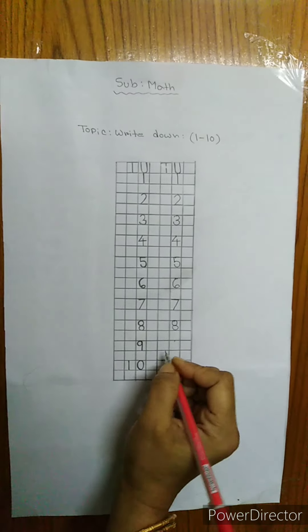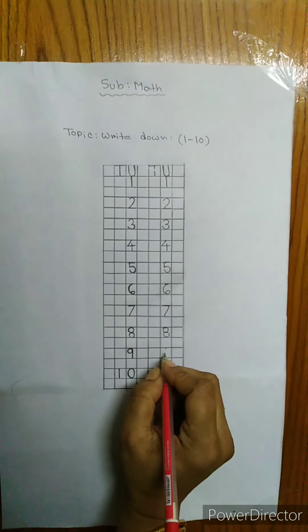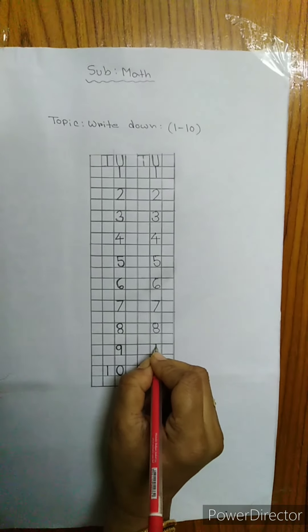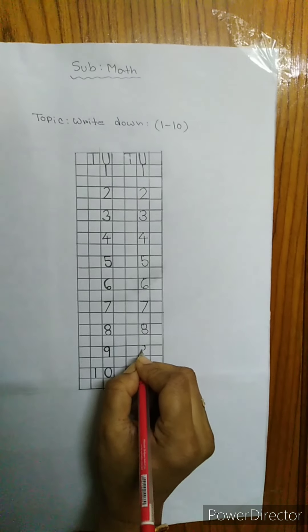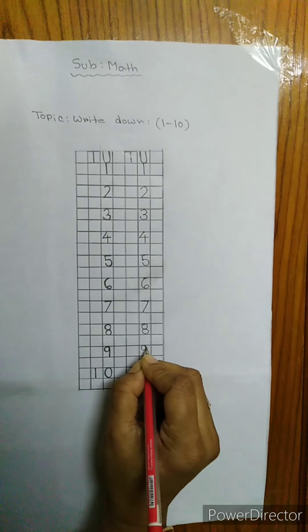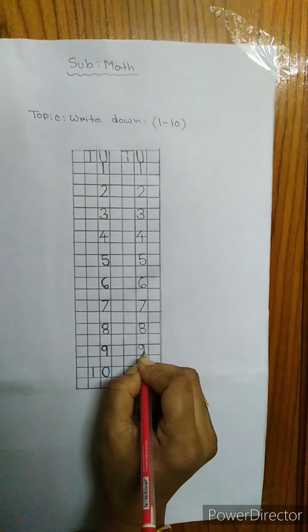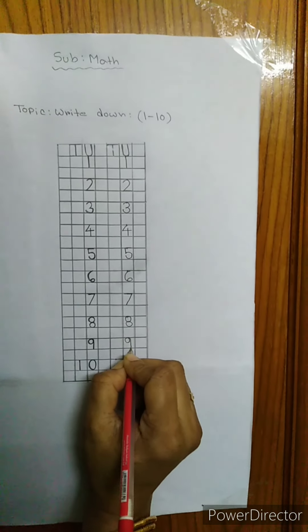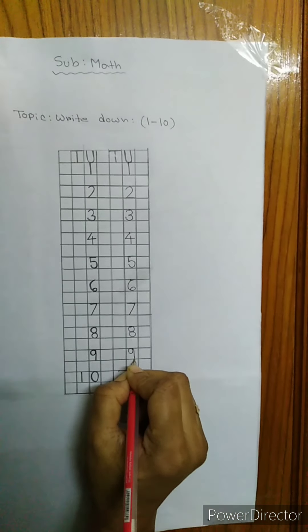Now, the next number is 9. At first, I will draw a small circle and a long straight line going down to the down line. This is 9.